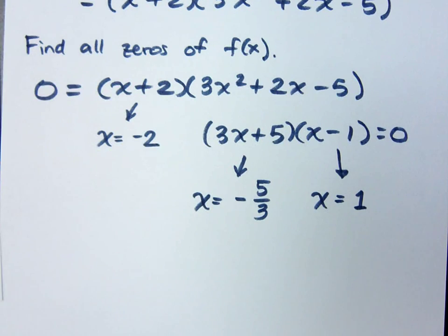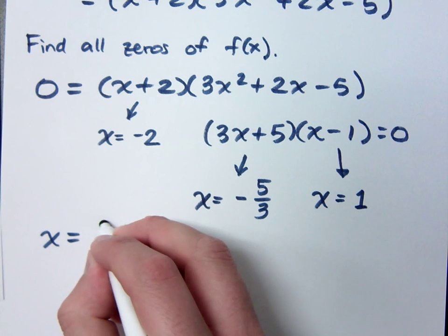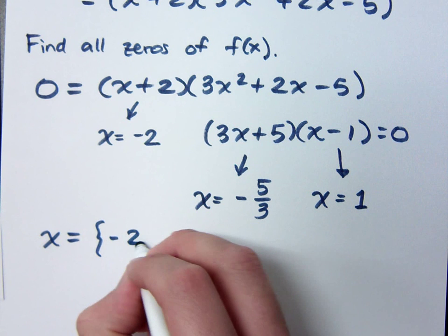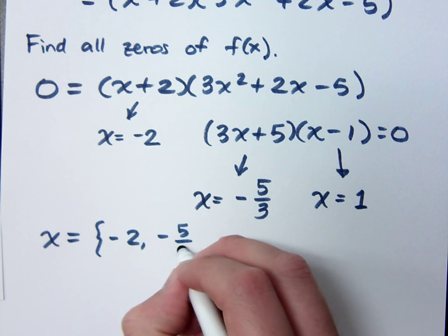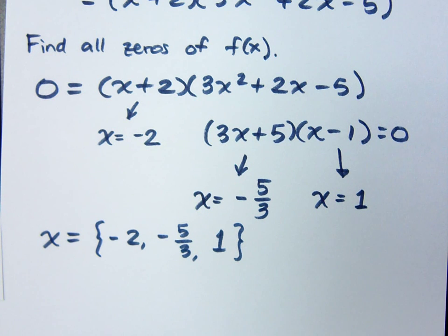So to find all of the zeros, and to list them correctly, I'm going to do it just like you would see in MyMathLab. So it's going to be negative 2, negative 5 thirds, and positive 1. Do you all agree with that? I'm listing my zeros. These are all the values that would make my original function equal to 0.